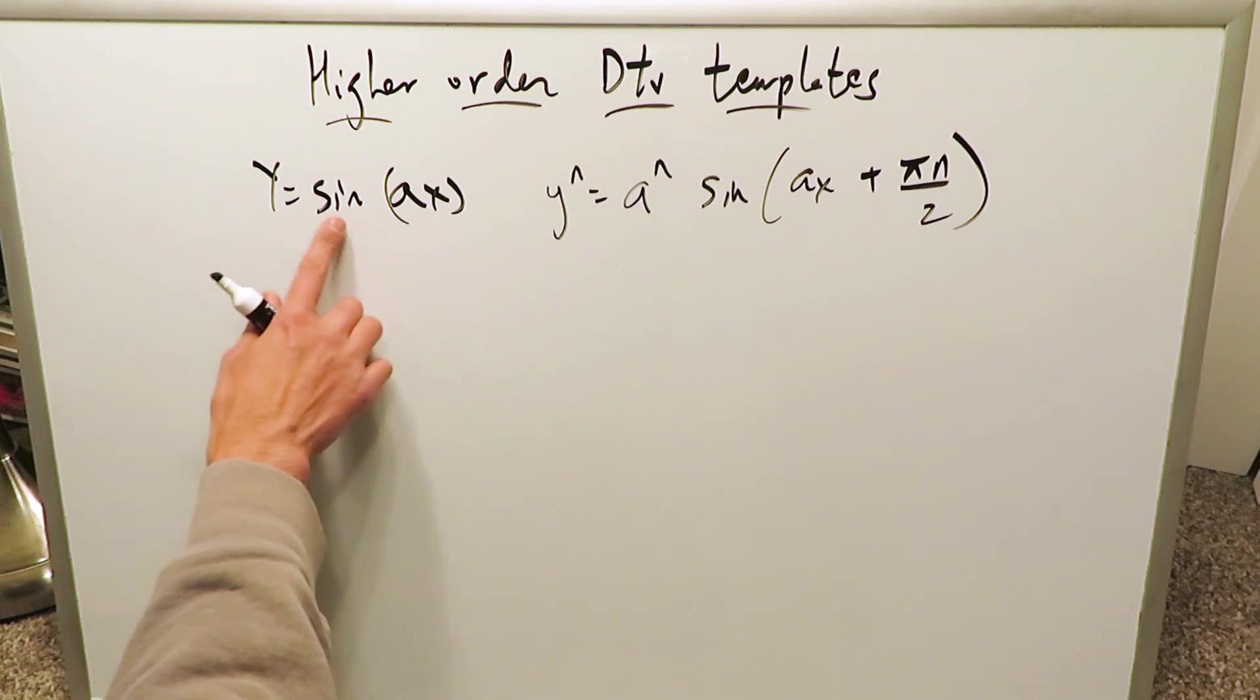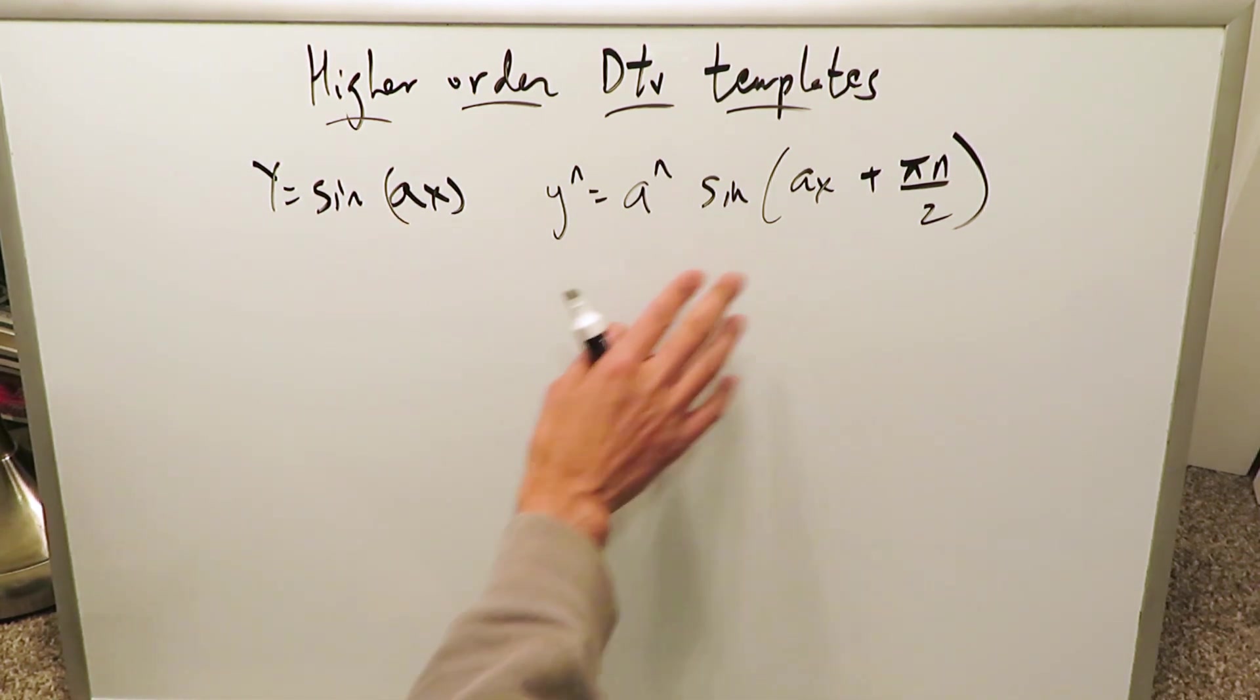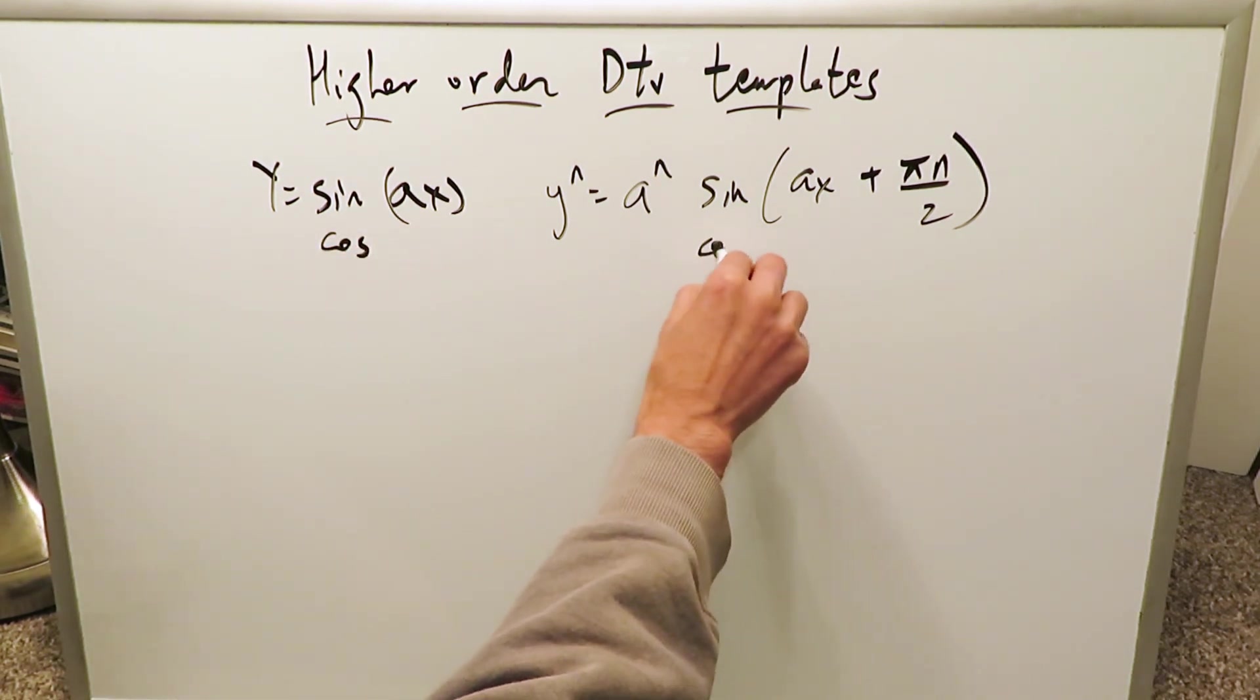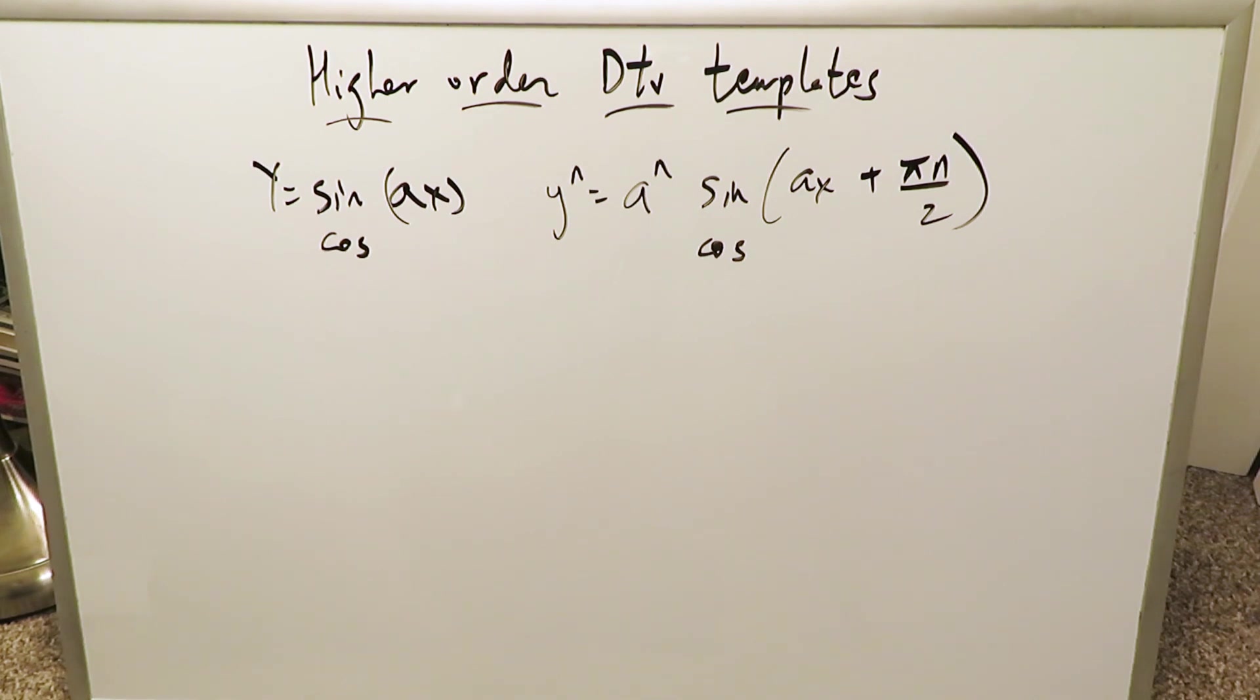We have here a function y equals sine ax. If you wanted to find a higher order derivative of it this is the template you would use and I have already alluded it's the exact same template for a cosine function as it is for a sine.